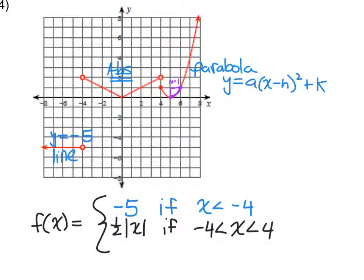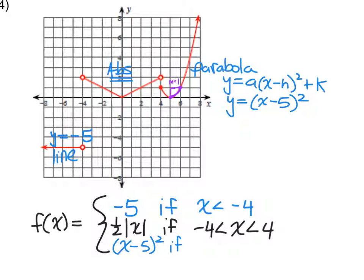I know my a value is one, I have a horizontal shift of five, and no vertical shift. So what should my equation be? The a value is one, horizontal shift is five, no vertical shift — y equals (x minus 5) squared. Exactly, that's the last piece. Greater than or equal to four — because we have a solid point at four so we can actually get to that location, and then we go on from there.